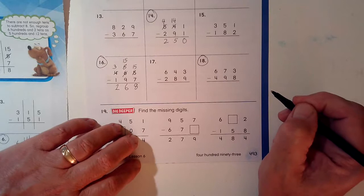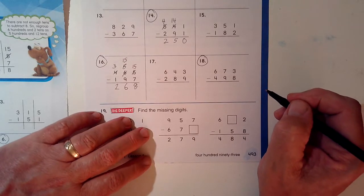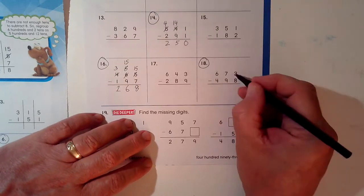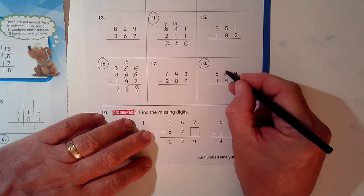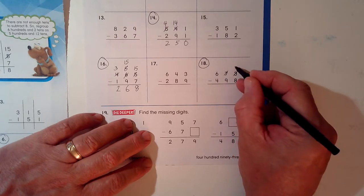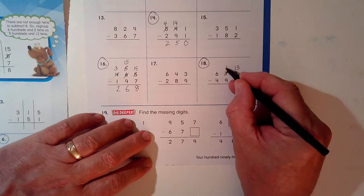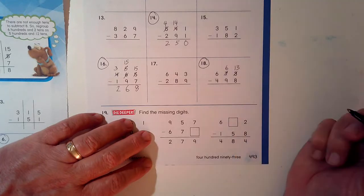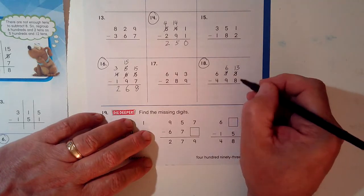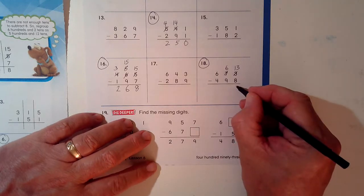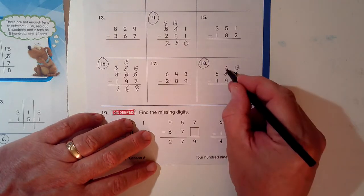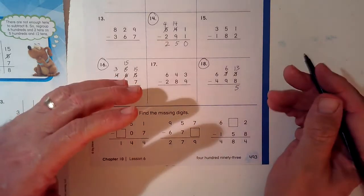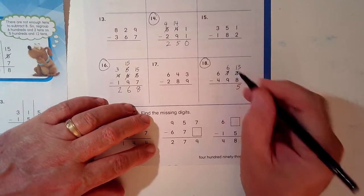3 minus 8, can I do it? I cannot. There's not enough room. So I take one of these sets of 10 and bring it over here. It's not 3 anymore, it's 13. This, there's only 6 left. Okay, 13 minus 8 is 5. 6 minus 9, can I do that? No. There's not enough here.